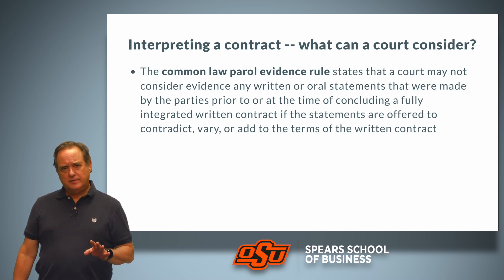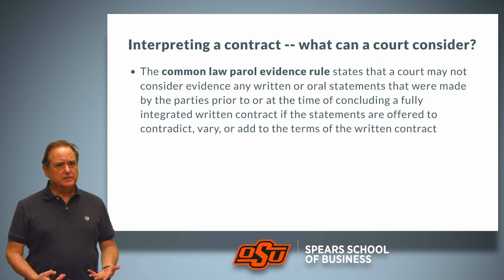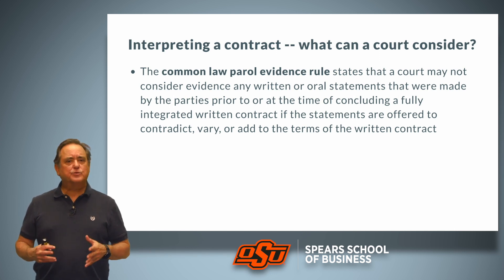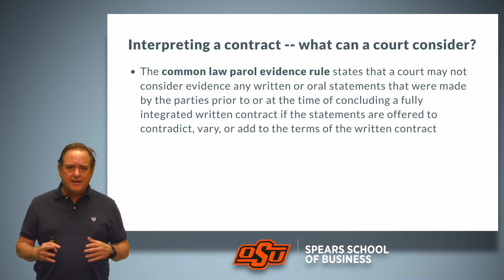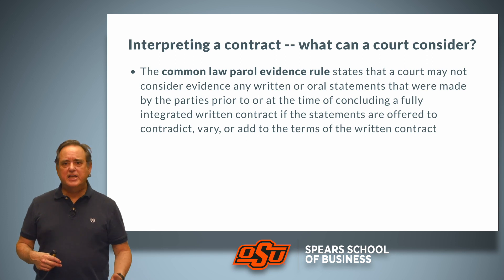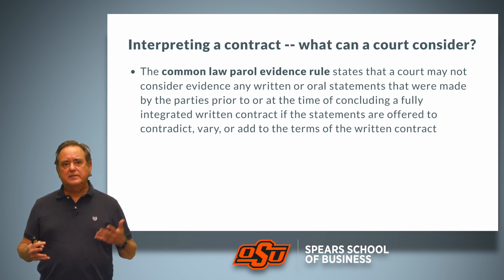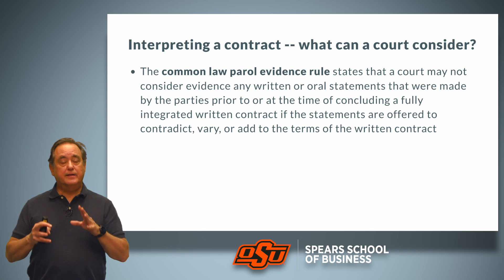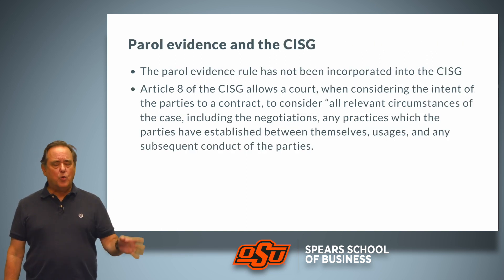When a court considers a contract, the question often comes up: what can a court consider? In the common law, we have the Parole Evidence Rule, which says that if there is a writing — if the contract is written down — a court cannot consider any other evidence, whether that is written statements, negotiations, emails exchanged, or oral testimony, if that testimony is meant to contradict, vary, or add to the terms of a written contract. If there's a writing, that's all the court can look at.